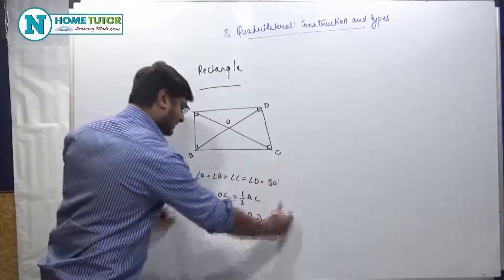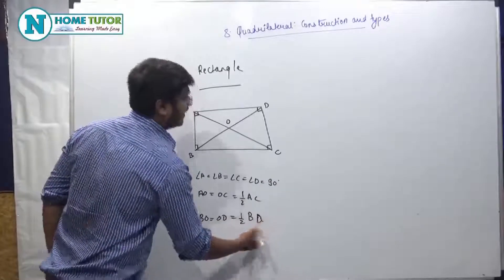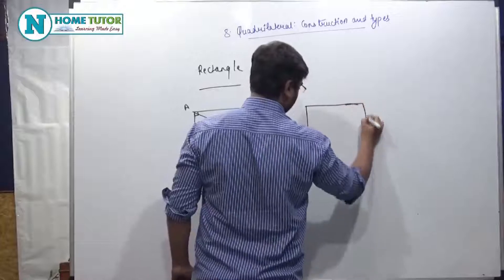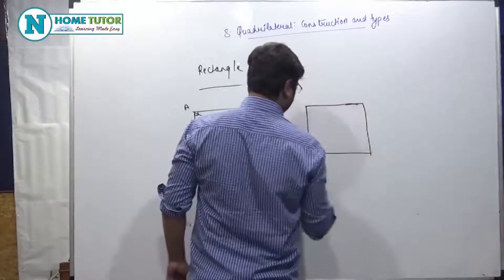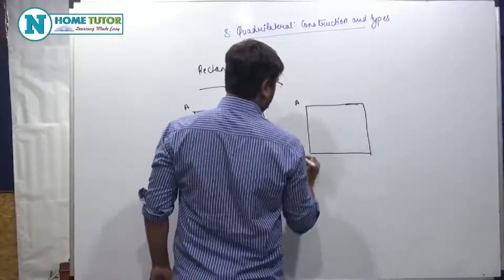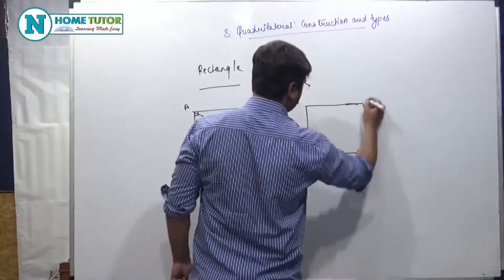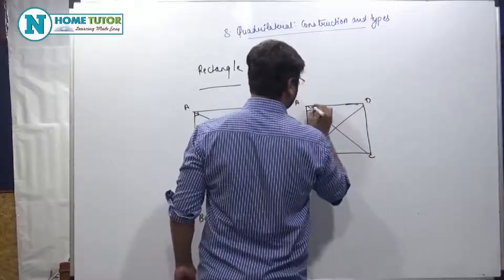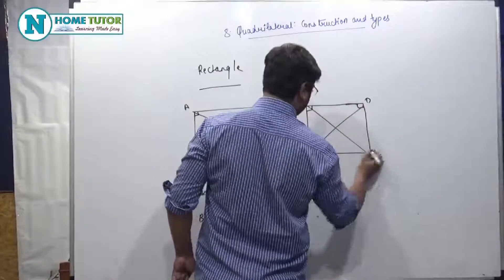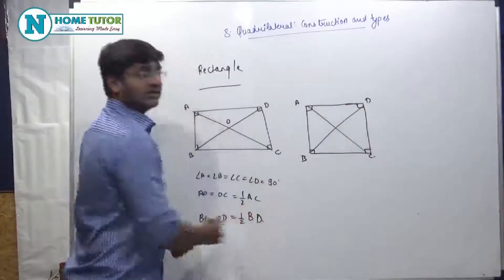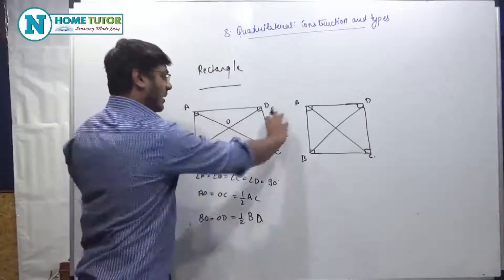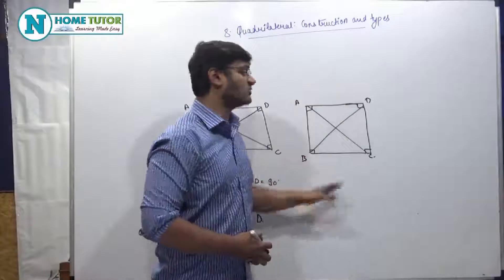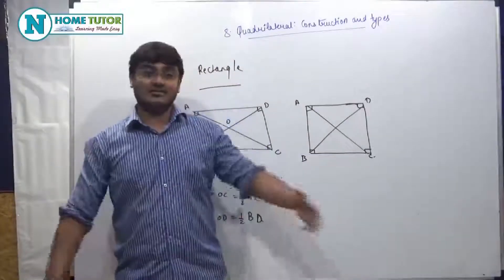यह तीन चीज़ें square के अंदर भी same होती हैं. अगर मैं कोई square लूँ — A, B, C, D — यह सारी qualities square में भी same हैं. Rectangle के अंदर opposite sides की length same होती है, whereas square के अंदर चारों sides की length same होती है.